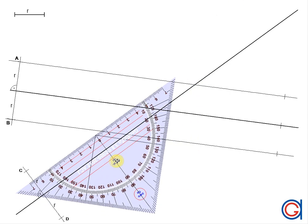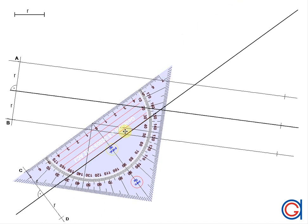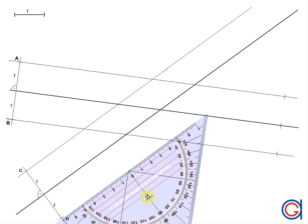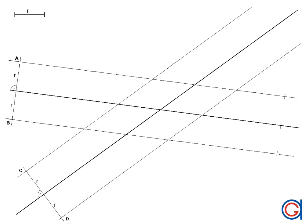Now we are going to do the same thing with the other intersecting line. From point c, we draw an elongated parallel line. And finally, we do the same thing from point d. We will mark these two parallel lines with the symbols of parallelism, as can be seen here.